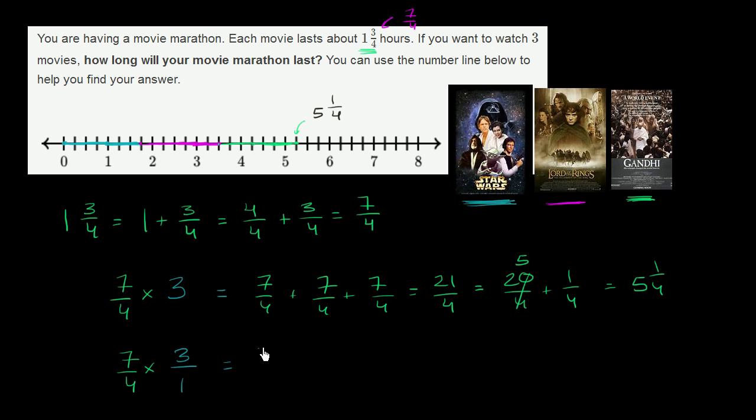In the numerator, I'm going to have 7 plus 7 plus 7. That's 7 times 3. In the denominator, I'm going to have 4 times 1, which is just 4. This is just 7 times 3 over 4, or 21 over 4, which we've already seen is 5 and 1 fourth.